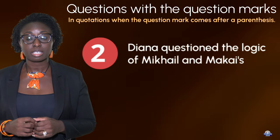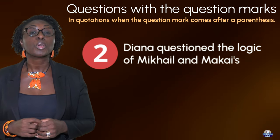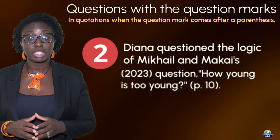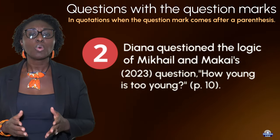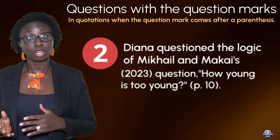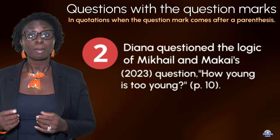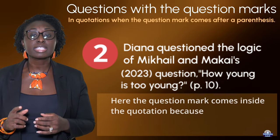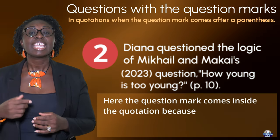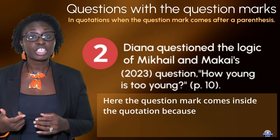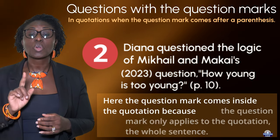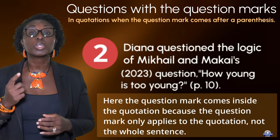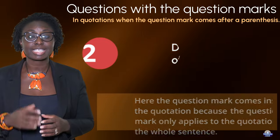Example number two. Diana questioned the logic of Mikhail and Makai's (2023) question, 'How young is too young?' (p. 10). Here, the question mark comes inside the quotation because the question mark only applies to the quotation, not the whole sentence.